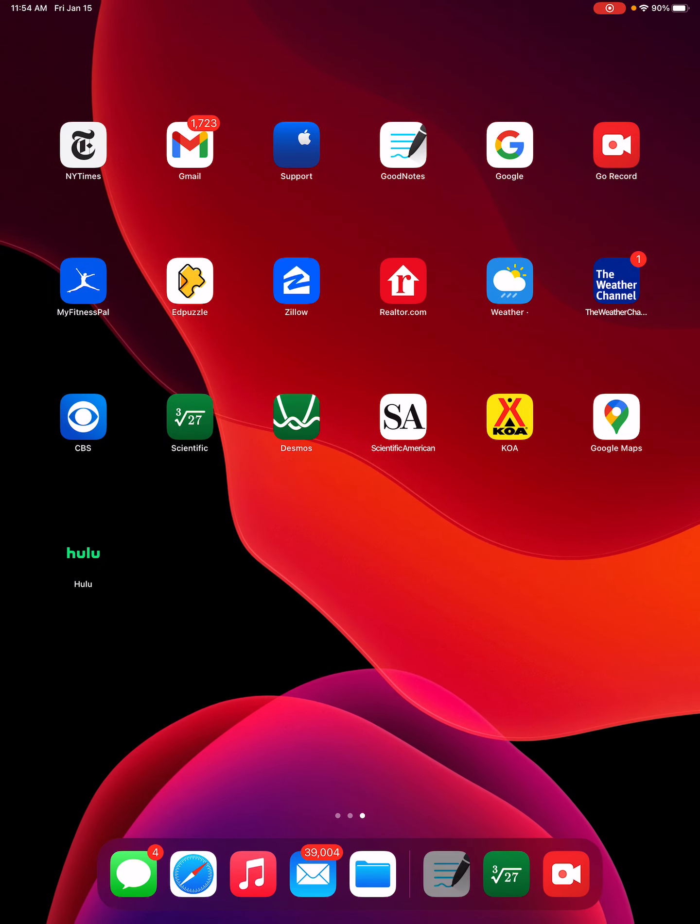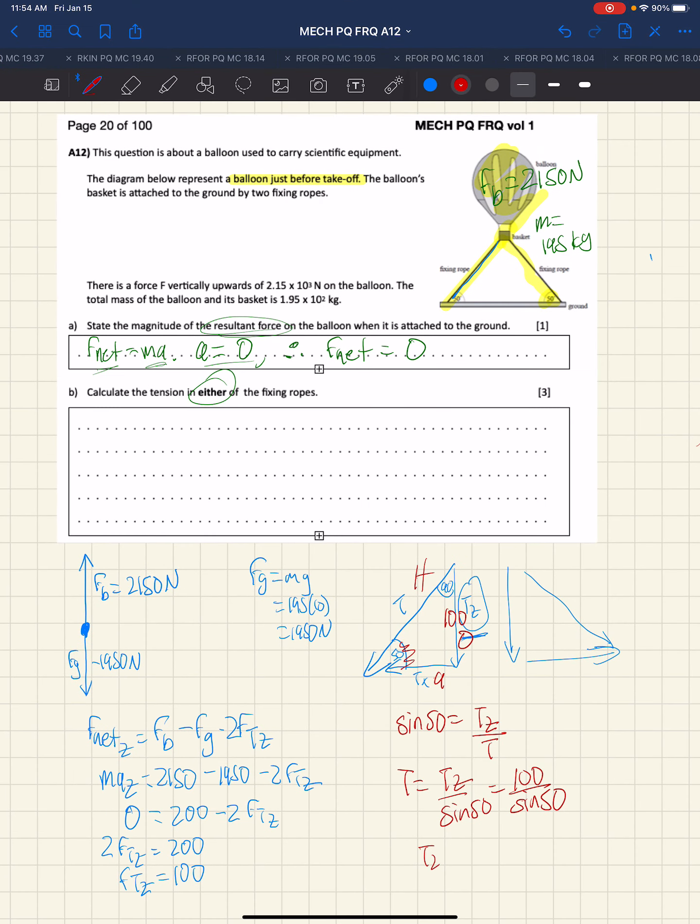T is 130.54 newtons. We go back to our triangle to see 130, the hypotenuse should be larger and it is, so we know we're fine there. That is the tension in either rope, so that's 130.